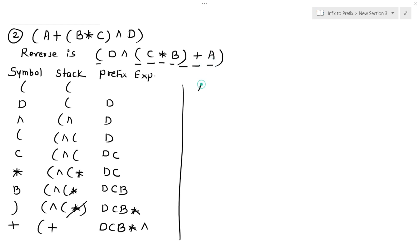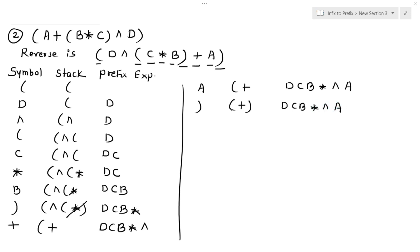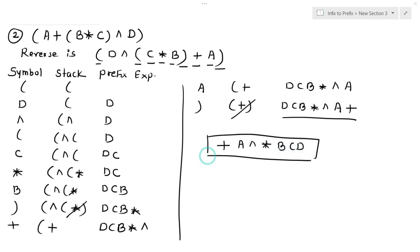a is an operand — it goes into the prefix expression. Expression: d, c, b, multiplication, exponential, a. Next is a right parenthesis — plus is between the left and right parentheses so it gets cancelled and placed into the prefix expression. Final expression: d, c, b, multiplication, exponential, a, plus. Now we reverse this to get the prefix expression: plus, a, exponential, multiplication, b, c, d. This is our prefix expression for the given infix expression.